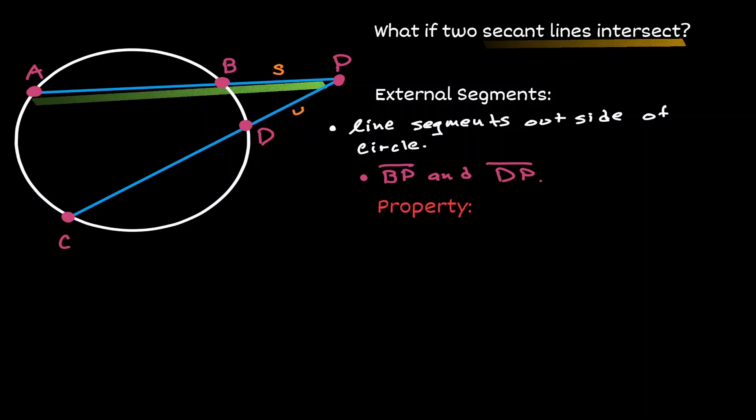Line segment AP, let's call it R, and line segment CP, let's call it T.